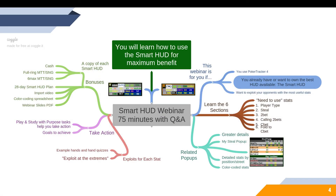This mind map covers the 75-minute Smart HUD webinar and shows all the different things I teach. The most important are the six sections of the HUD — both the six-max tournament and cash game HUD. I also cover the six pop-ups and give detailed breakdowns by position and by street for all statistics. I explain how to exploit every stat: when someone does something too frequently or not frequently enough — what I call exploiting at the extremes — plus action steps on and off the felt.